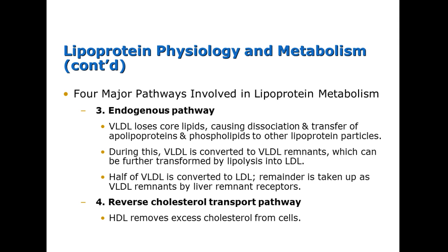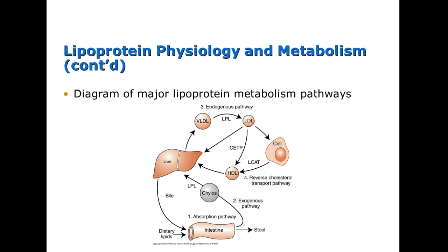After that, HDL removes excess cholesterol from the cells. Looking at a diagram of this entire pathway: dietary lipids in your intestine are absorbed and carried by chylomicrons to the liver. From the liver, VLDL is converted to LDL by lipoprotein lipase, where it is used by the cell or carried back to the liver by HDL. Any excess lipids not being used are brought back to the intestine via bile. You should know the roles of the liver, chylomicrons, VLDL, LDL, and HDL, along with their reference ranges.